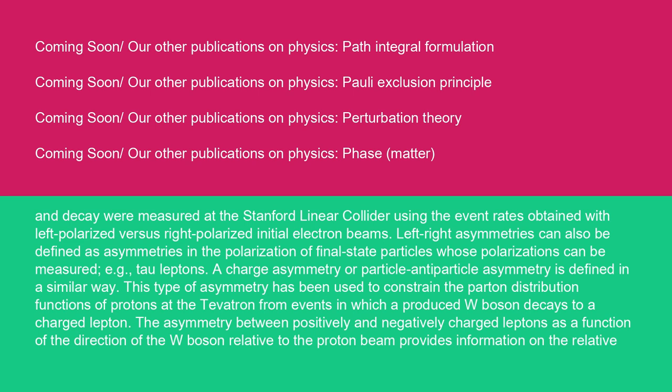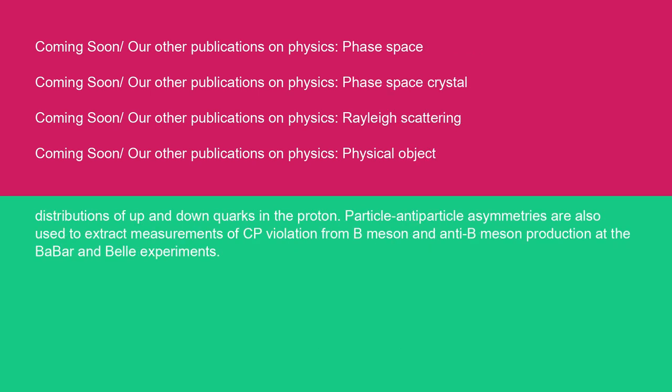A charge asymmetry or particle-antiparticle asymmetry is defined in a similar way. This type of asymmetry has been used to constrain the parton distribution functions of protons at the Tevatron from events in which a produced W-boson decays to a charged lepton. The asymmetry between positively and negatively charged leptons as a function of the direction of the W-boson relative to the proton beam provides information on the relative distributions of up and down quarks in the proton. Particle-antiparticle asymmetries are also used to extract measurements of CP violation from B-meson and anti-B-meson production at the BaBar and Belle experiments.